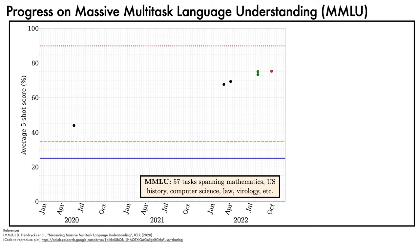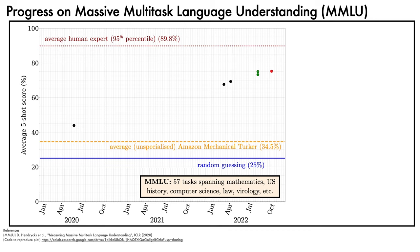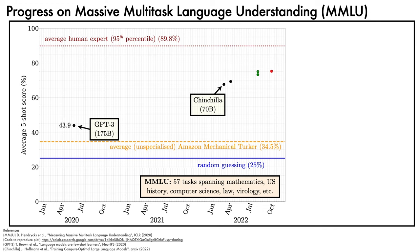Each question in the benchmark has 4 multiple choice answers, so the performance of random guessing is 25%. The average score of a group of unspecialised Amazon Mechanical Turkers is 34.5%. By using data about outstanding human test takers at the 95th percentile, expert human performance is estimated at 89.8%. The May 2020 175 billion parameter GPT-3 model achieves 43.9%. The March 2022 70 billion parameter Chinchilla model scores 67.6%, while the 540 billion parameter PaLM model announced in April 2022 scored 69.3%.